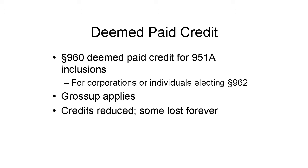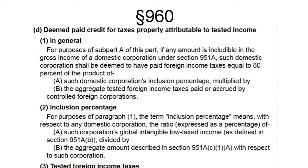If the foreign tax credit is chosen, the 951(A) inclusion is grossed up for the portion of tax allocated to the inclusion. Section 960 tells how the taxes flow, and new subsection D tells how to apportion income tax among 951(A) and other income. This allocation and apportionment is done partly at the CFC level and partly at the shareholder level.